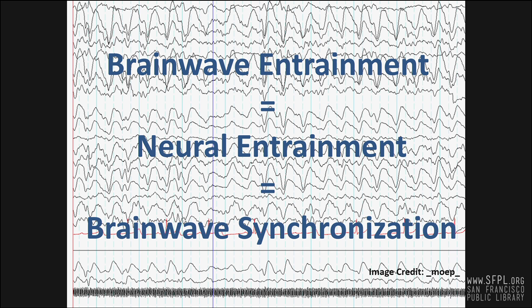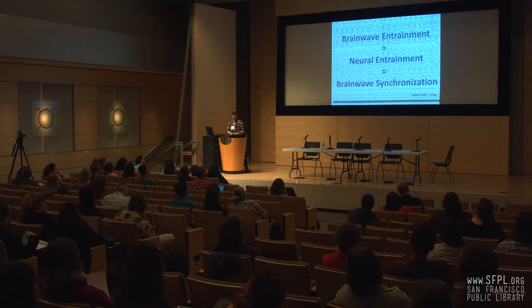Examples of intended brain states include inducing a trance, sleep, relaxation, or focus. Brainwave entrainment was first identified through scientific tests in 1934, but has been happening for a long time. We'll talk about some examples of brainwave entrainment throughout history, starting with the use of visual stimuli.